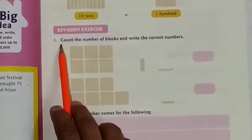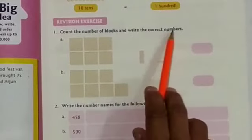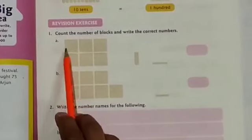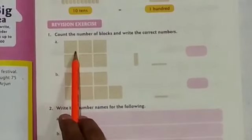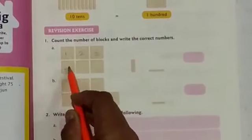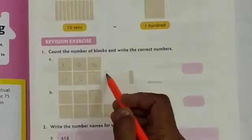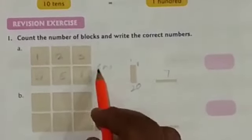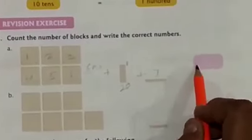Look at page number 11 of this book. We will start the revision exercise today. Count the number of blocks and write the correct numbers. One cube represents 100 blocks. So counting cubes: 100, 200, 300, 400, 500, 600 — total 600. One pillar of blocks represents 10. There are 2 tens, meaning 20. Loose single blocks: 1, 2, 3, 4, 5, 6, 7 — that is 7. So 600 plus 20 plus 7 equals 627.